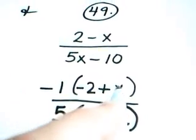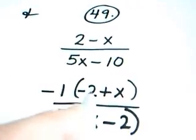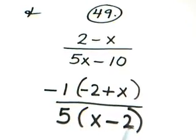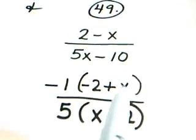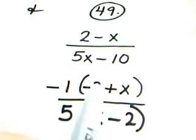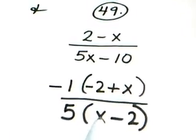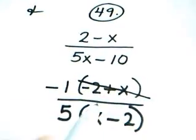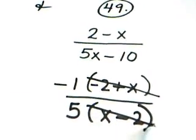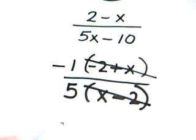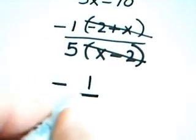Now, notice what happens. x minus 2 on the top, x minus 2 on the bottom. Even though this may look weird to you, it's really x minus 2. It matches this x minus 2. They're an identical match, so they cancel. And we're left with the answer negative 1 fifth.